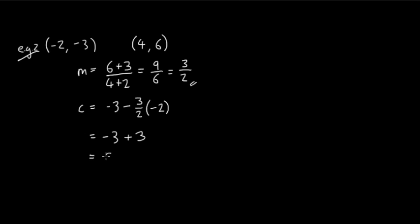And minus 3 plus 3 equals 0. So in this case, my equation of a straight line is y equals m, 3 over 2, times x, plus 0. So that is just my equation of a straight line. So hopefully you're happy now, and you can go and calculate equations of a straight line.